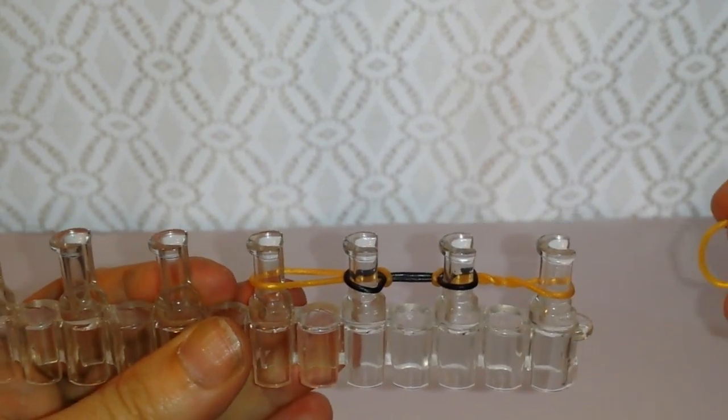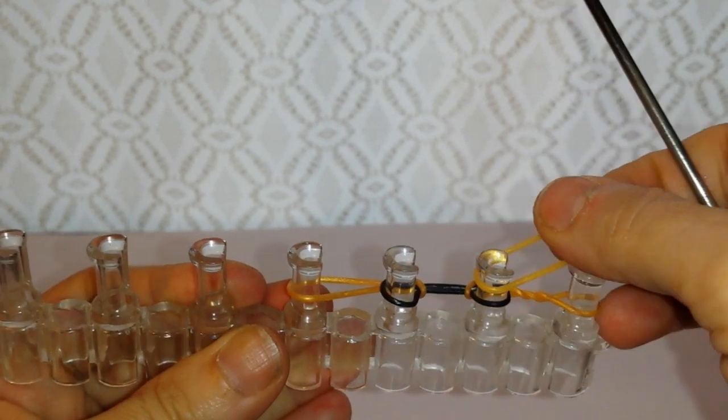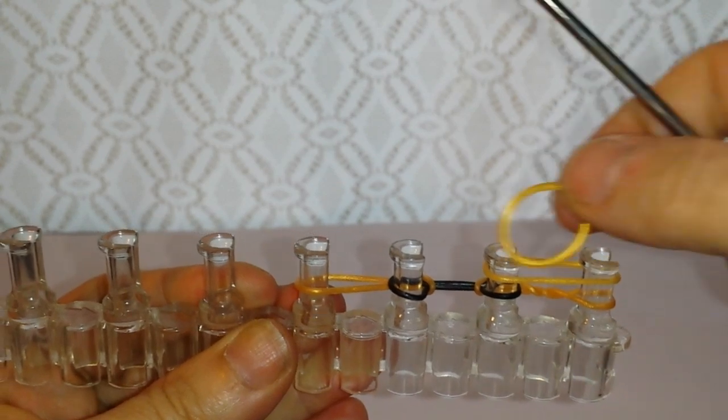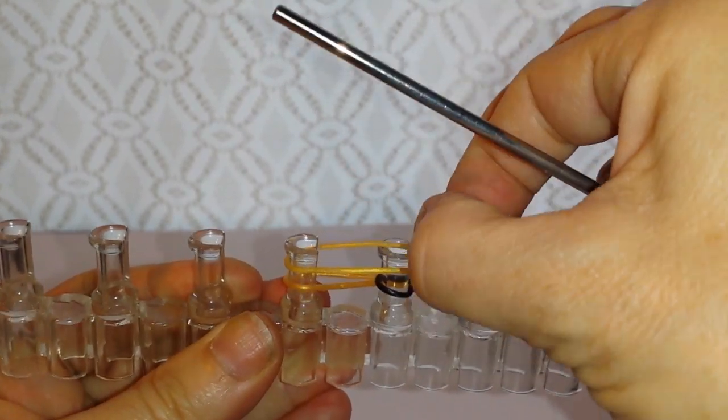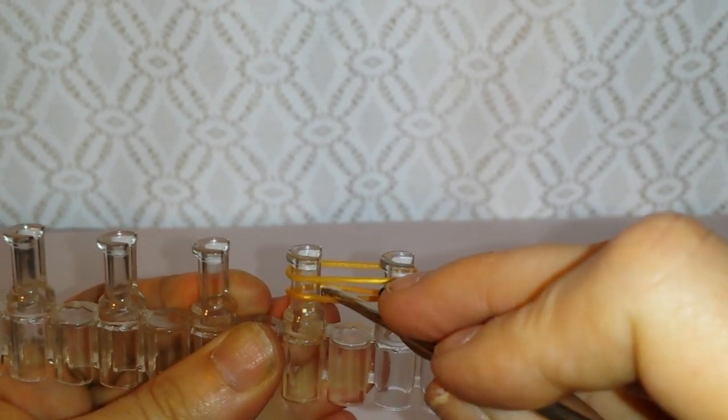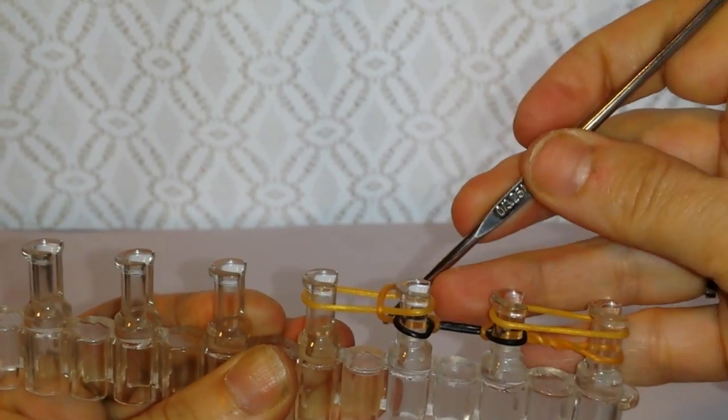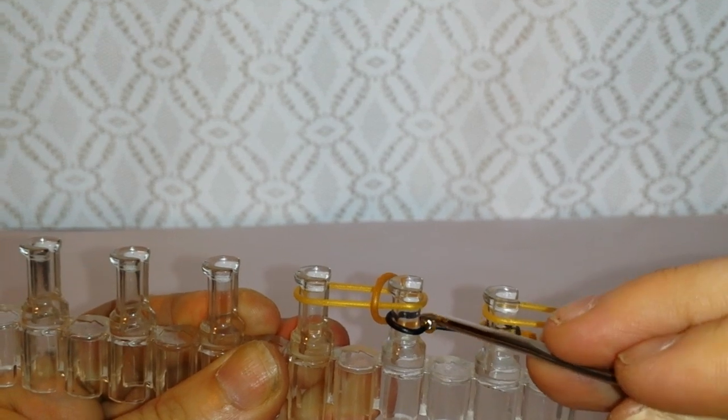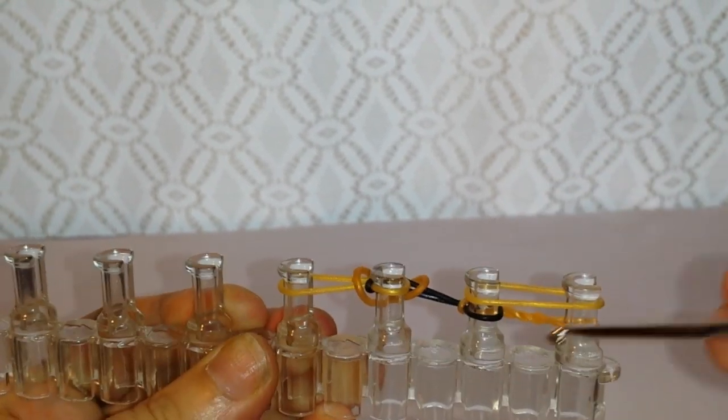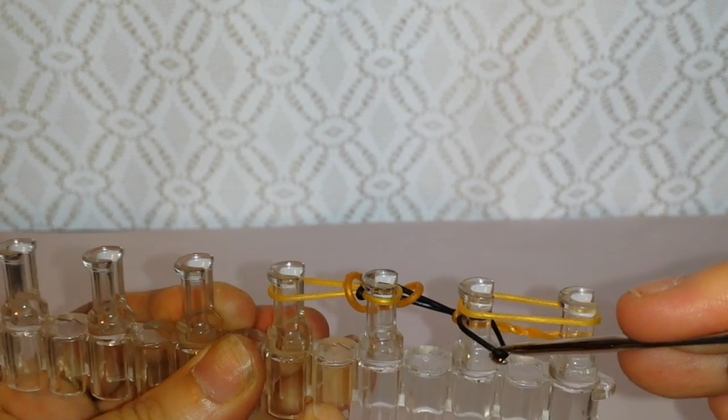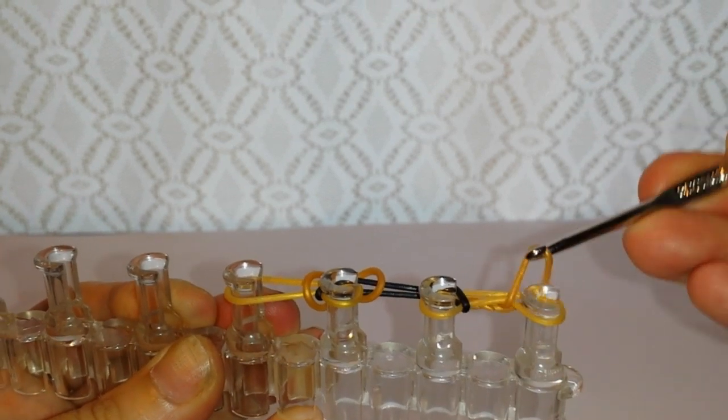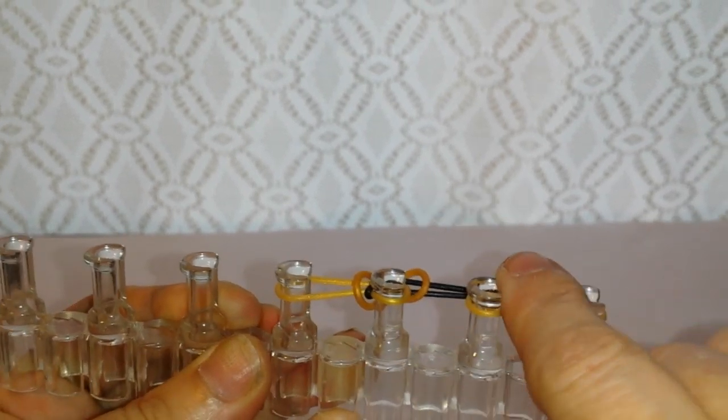I'm alternating colors to help you get the idea of which bands go on next and you're going to put on the opposite row. This row you're pulling over all four pegs all the way up over the top of the peg to the back and push it down.